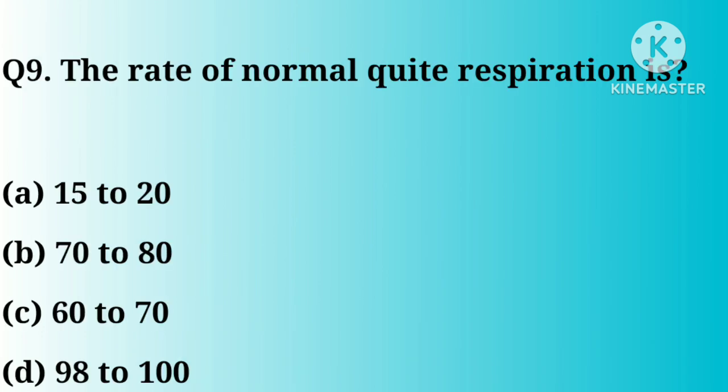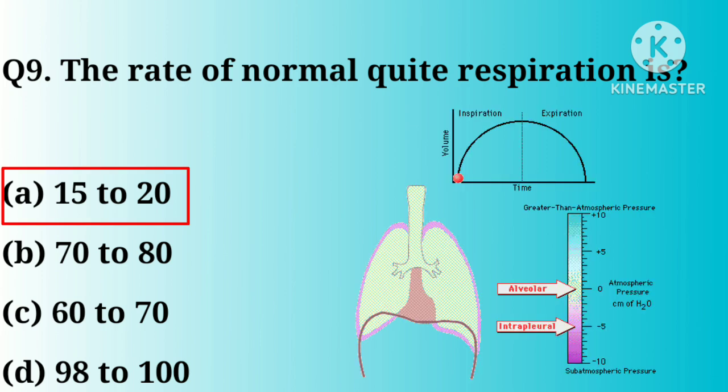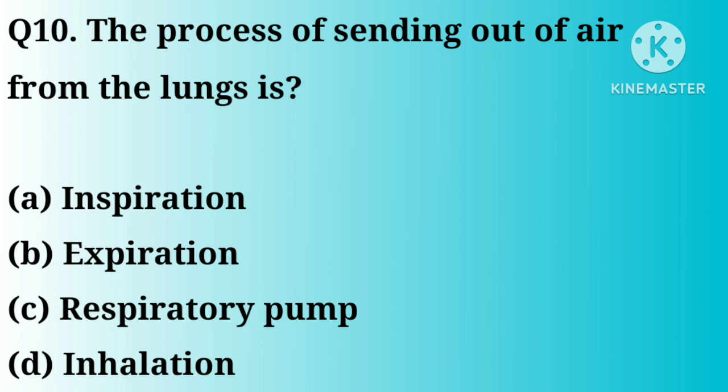Q9. The rate of normal respiration is: option A, 15–20; B, 72–83; C, 60–70; D, 98–100. Great answer, option A.